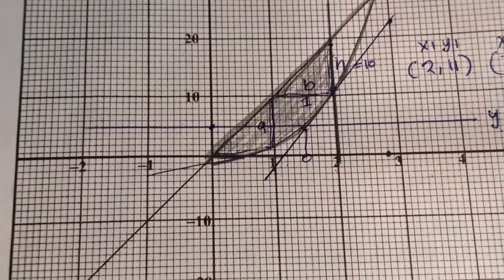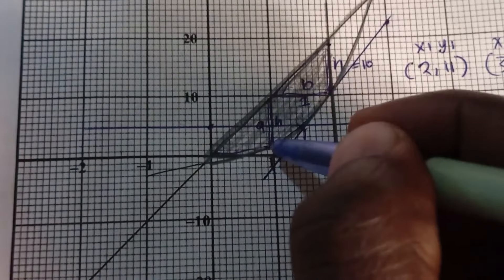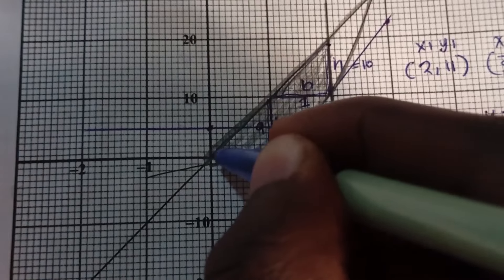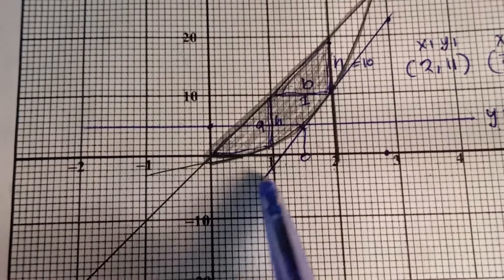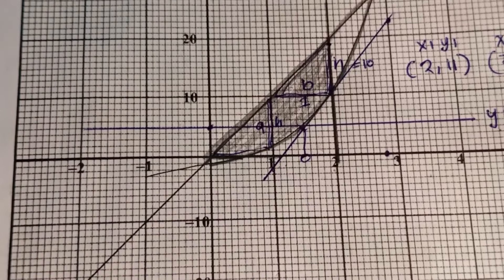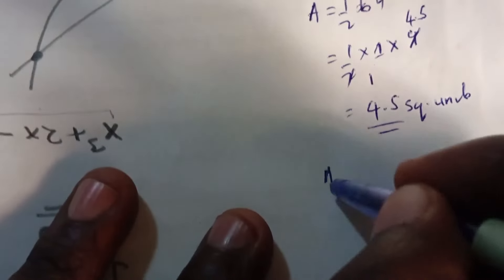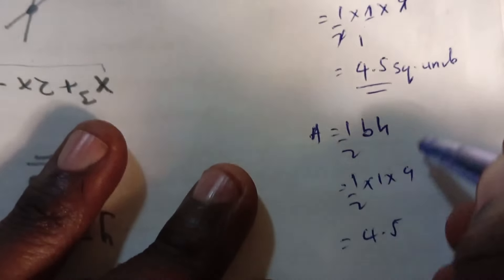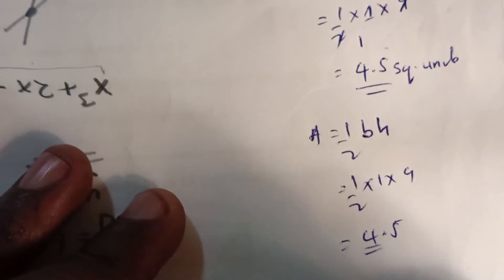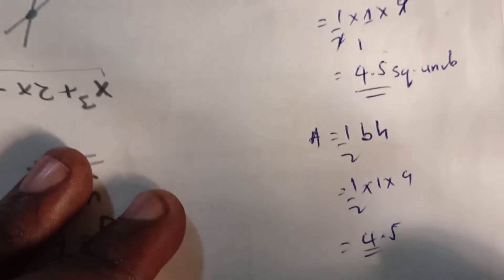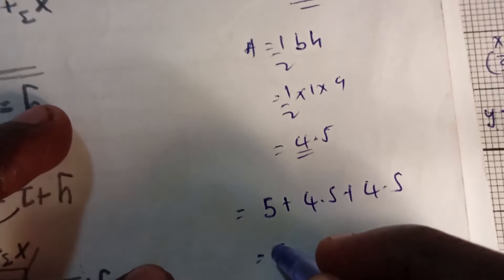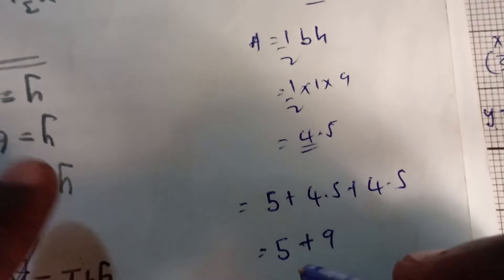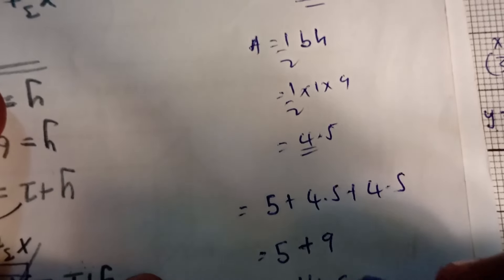For the third triangle, the height is also 9 units and the base is estimated at 1 unit. Area = ½ × 1 × 9 = 4.5 square units. Adding all three areas: 5 + 4.5 + 4.5 = 14 square units. That is the estimated area.